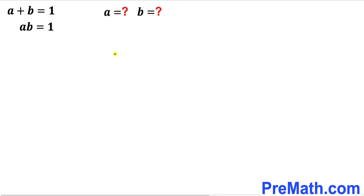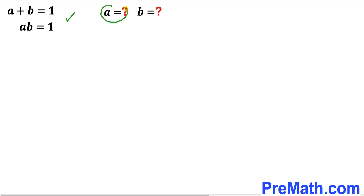Welcome to PreMath. In this video we have got a system of two equations. Our first equation is a plus b equals to 1, and our second equation is a times b equals to 1 as well. We are going to solve this system of equations — in other words, find the value of a and the value of b.